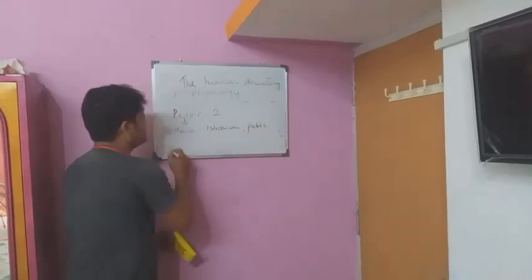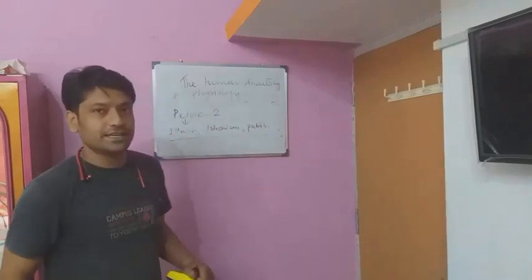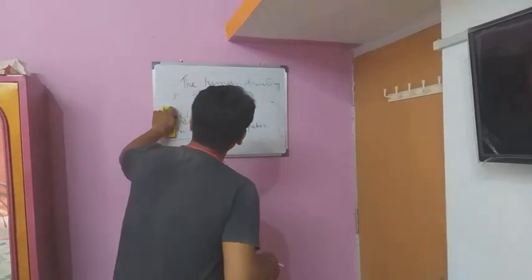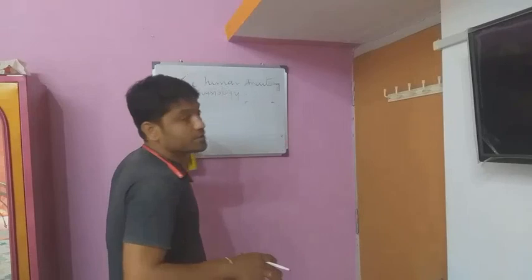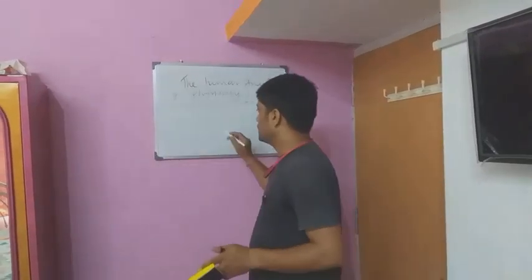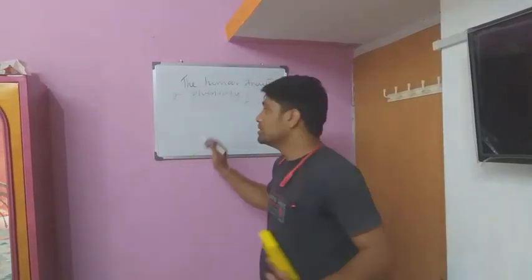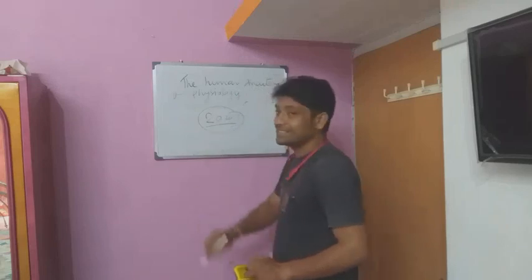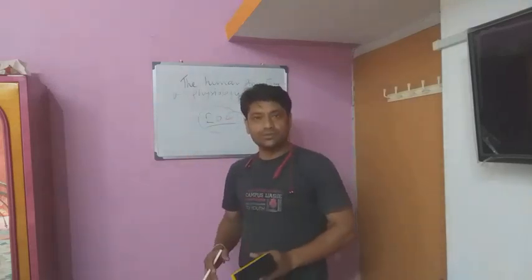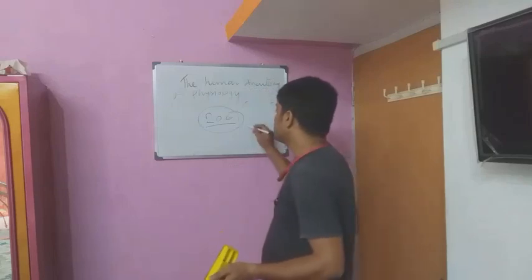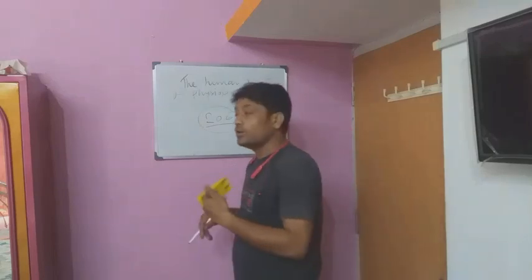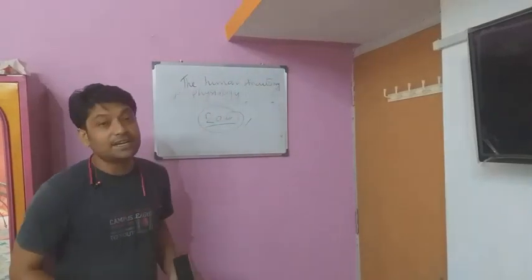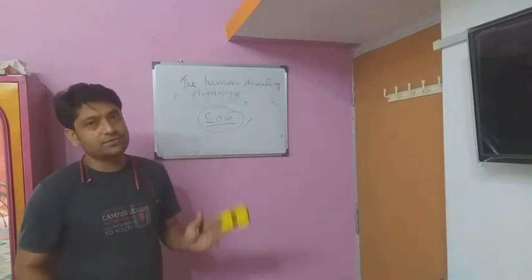The pelvic girdle consists of three parts — ilium, ischium, and pubis — making 6 bones in total, but when calculating the overall count we consider 2 bones for the pelvis. So the total number of bones in the human body is 206 bones. Next, I will briefly discuss the scapula, humerus, ulna, carpal, phalanges, and vertebrae in more detail. Thank you.